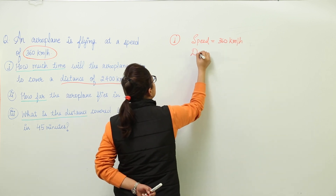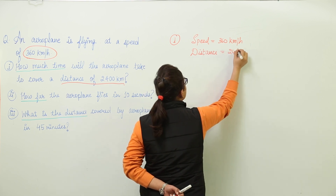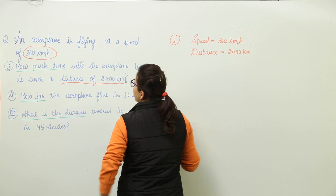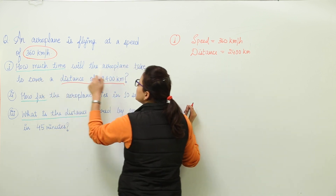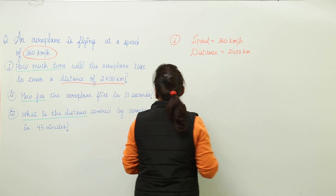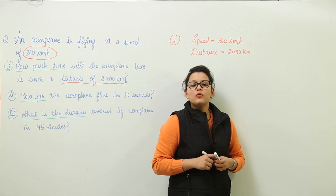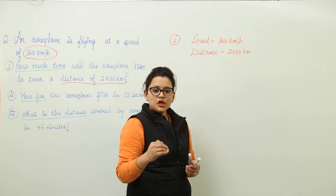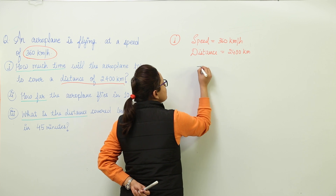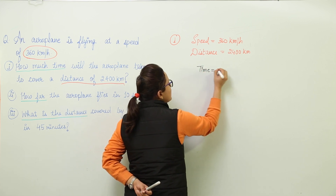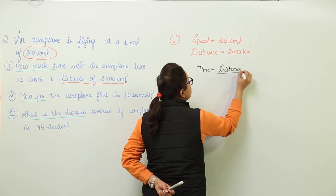The distance given in the first part is 2400 kilometers. The question is asking how much time the aeroplane will take to cover 2400 kilometers. That means we need to find the time taken. So let us write down the formula for time: time is equal to distance divided by speed.